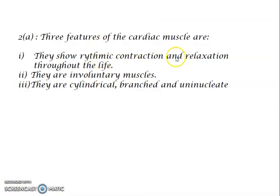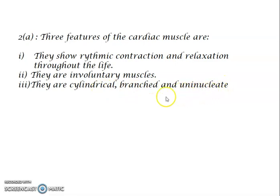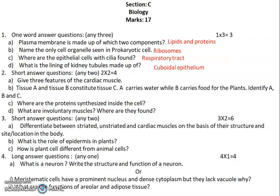The three features of cardiac muscles are: first, they show rhythmic contraction and relaxation throughout life; second, they are involuntary muscles, meaning their functioning cannot be controlled; third, the cells of cardiac muscles are cylindrical, branched, and uninucleate — meaning they have only one nucleus.